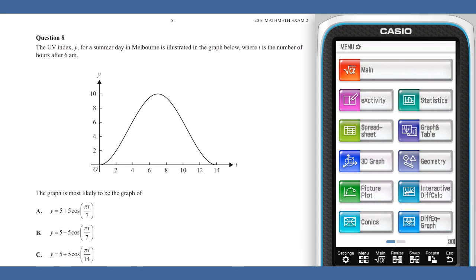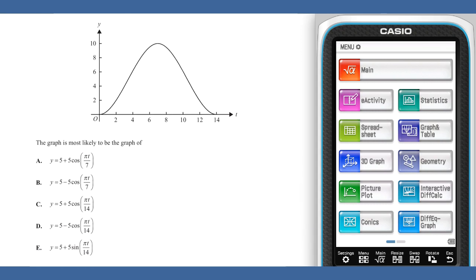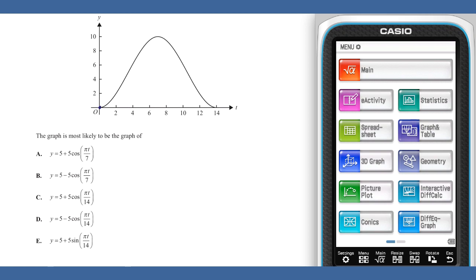In question 8, it appears that the function concerned is a trigonometric one. It also appears that the period of this function is 14. The value 2 pi over 14, being pi over 7, means that we can concern ourselves with answers a and b. These answers are quite similar. They both have a 5, corresponding to a principal axis of 5. However, they differ in terms of the sign of the cos term, and as our curve resembles a cosine curve reflected, our answer is going to be b.